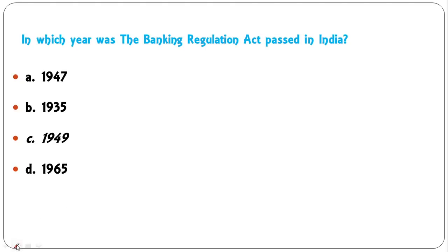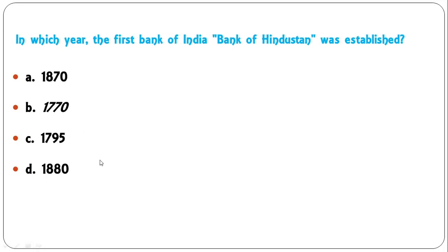Next question: in which year was the Banking Regulation Act passed in India — 1947, 1935, 1949, or 1965? The Banking Regulation Act, popularly known as the BR Act, was enacted in 1949.